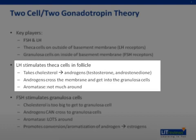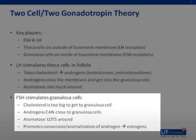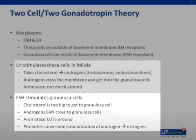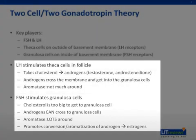There is no significant amount of aromatase in the theca cells, so the process of conversion stops at the androgen level. The androgens are then small enough to cross the membrane and get into the granulosa cells. These granulosa cells respond to FSH and have lots of aromatase, which allows the conversion of androgen to estrogen. So ultimately, the process of converting cholesterol to estrogens requires two cells and two separate hormones. If you have a defect in either cell, you don't have a balanced process.